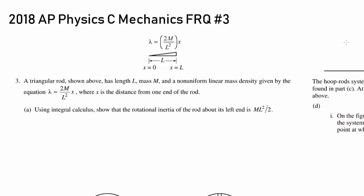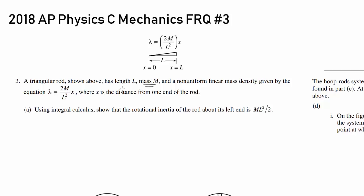Time for the grand finale — Free Response number 3. A triangular rod shown above has a length of L, mass of M. Let's make sure we don't forget these things: length is L, mass is M, and a non-uniform linear mass density.